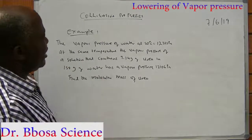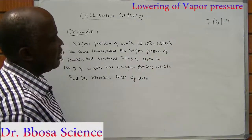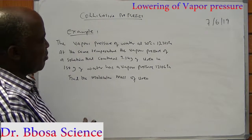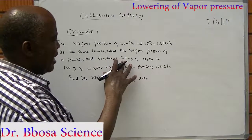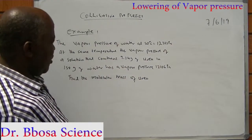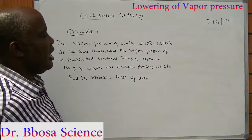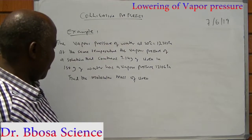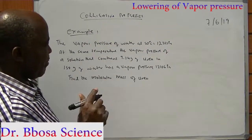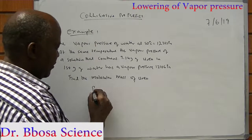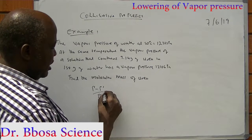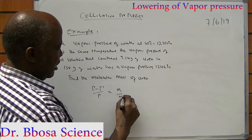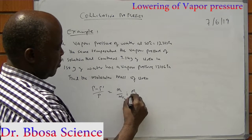Example 1: The vapor pressure of water at 50 degrees is 12,333 Pascals. At the same temperature, the vapor pressure of a solution containing 9.14 grams of urea in 150 grams of water has a vapor pressure of 12,160 Pascals. Find the molecular mass of urea. From P minus P-dash over P equals m1 over MR1 divided by m2 over MR2.